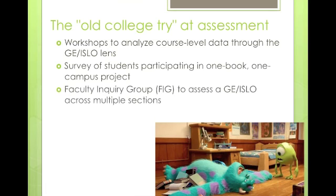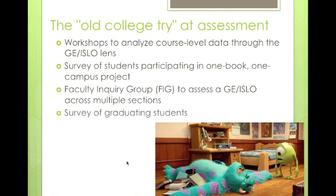We also developed faculty inquiry groups. Those groups would choose a GEISLO, then take a rubric developed to assess that particular GEISLO across assignments in multiple sections. Again, it was a successful assessment technique, but something very difficult to scale up to address all GEISLOs across all sections. Finally, we tried a survey of graduating students, first done in 2013 and repeated in 2014, using it as a culminating opportunity with a captive audience waiting to graduate, to get a sense of whether students had achieved the outcomes we were hoping for.